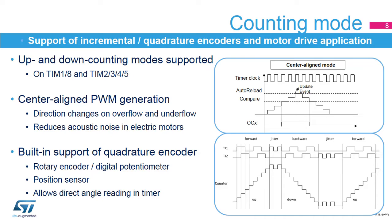Quadrature encoders are typically used for high-accuracy rotor position sensing in electrical motors or for digital potentiometers. From the two outputs of a quadrature encoder sensor, also called an incremental encoder, the timer extracts a clock on each active edge and adjusts the counting direction depending on the relative phase shift between the two incoming signals. The timer counter thus directly holds the angular position of the motor or potentiometer.